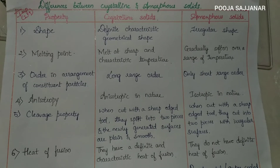But amorphous solids do not have a regular arrangement of constituent particles. Therefore, they don't have a definite geometry — they have an irregular shape.